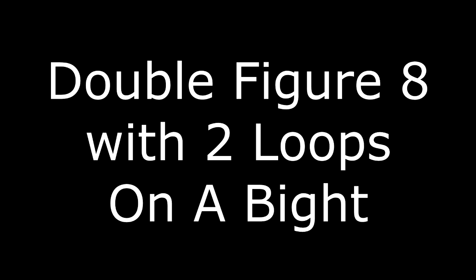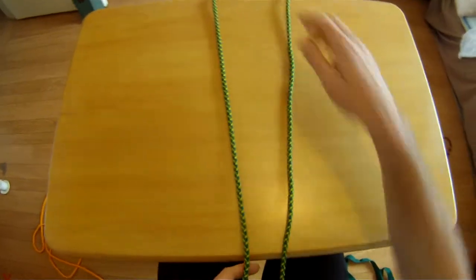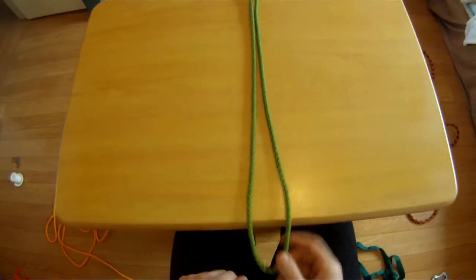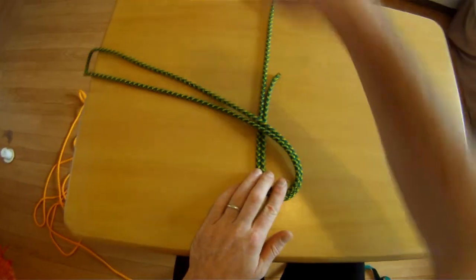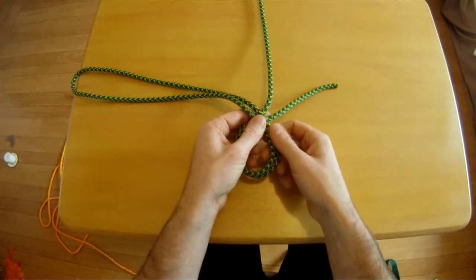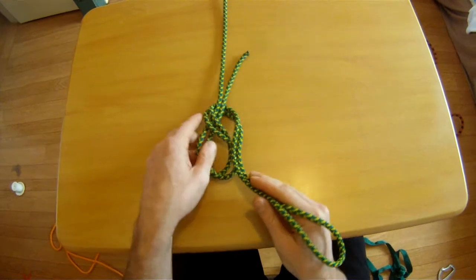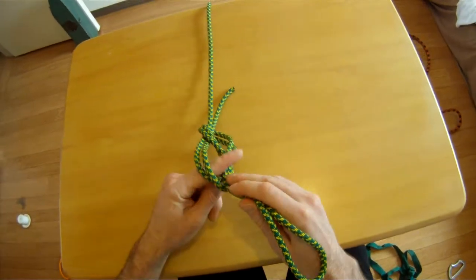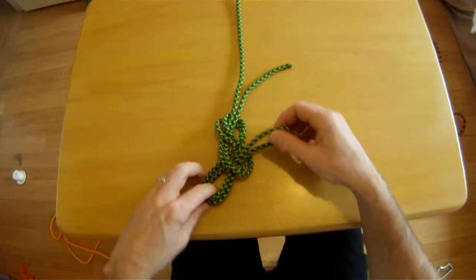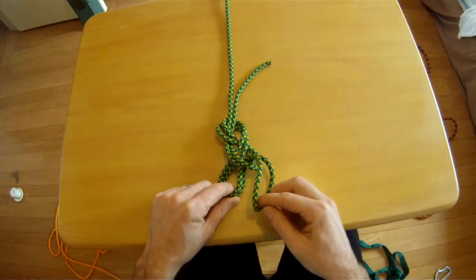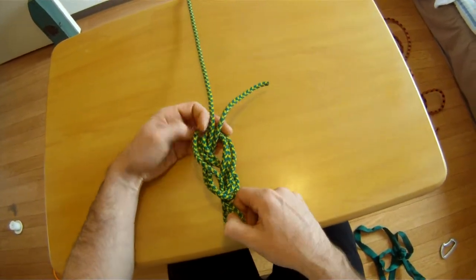Now, the double figure eight with two loops tied on a bite is an extremely strong and useful climbing knot that a lot of climbers surprisingly don't know. Take a big bite of rope and tie your figure eight knot, but don't slip the end through. Instead, pull the strand through, knot all the way, and the very tail end you should flip all the way up around the knot to the top.